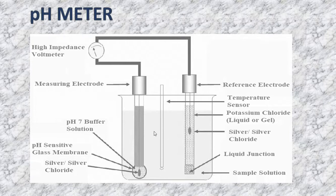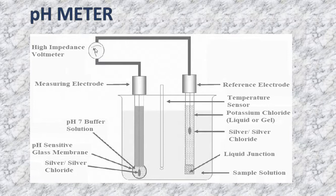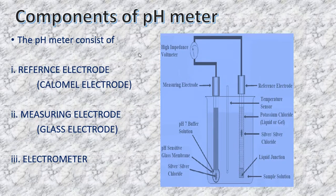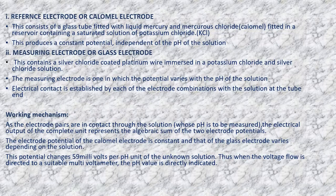The electrode potential of the calomel electrode is constant, while that of the glass electrode varies depending upon the solution. This potential changes by about 59 millivolts per pH unit of the unknown solution. When the voltage flow is directed towards the electrometer, the pH value is directly indicated on the meter — giving you the pH of the solution being tested.